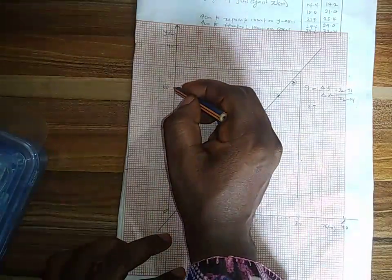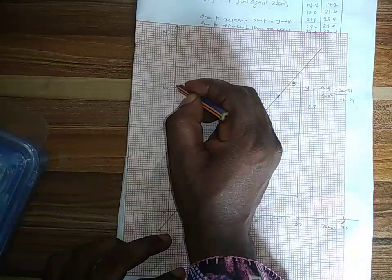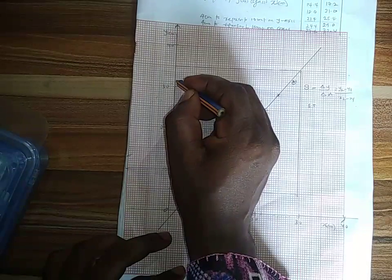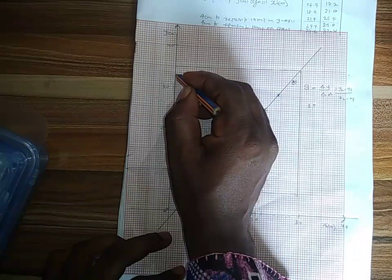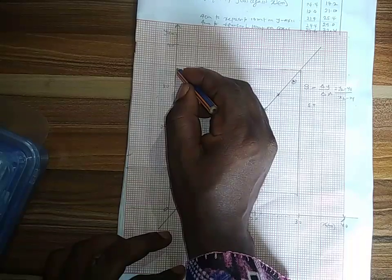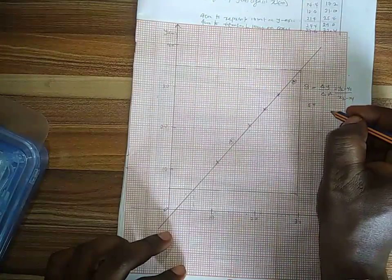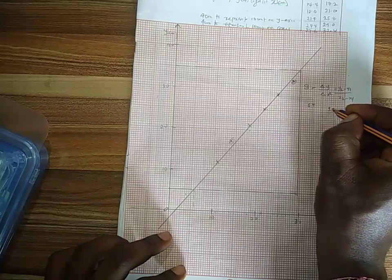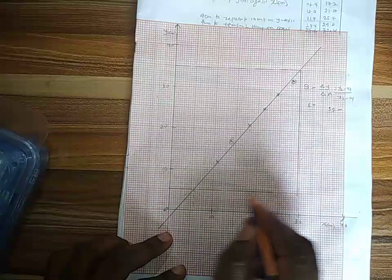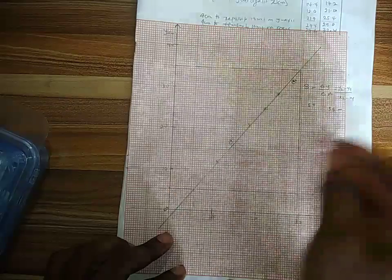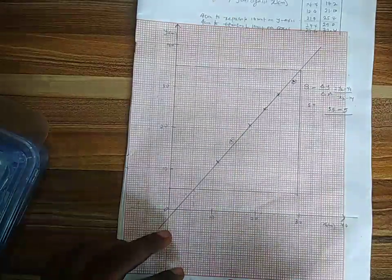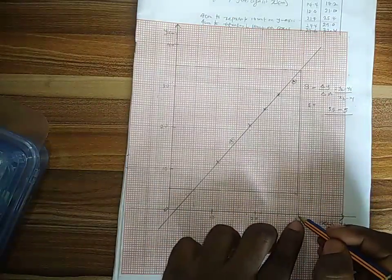is. Now my y2 is 13. So I have one, two, three, four, five, six, seven, eight, nine, oh 10, 35. So let me have 35 minus, where's my y1? Here, five. Five over, where's my x2? See my x2, my